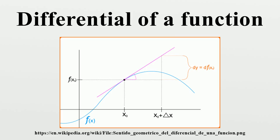From this principle the error rules of summation, multiplication, etc. are derived. For example, let f equal a times b. Then delta f equals f_a times delta a plus f_b times delta b. Evaluating the derivatives gives delta f equals b times delta a plus a times delta b. Dividing by f, which equals a times b, gives delta f over f equals delta a over a plus delta b over b.